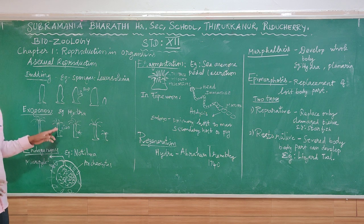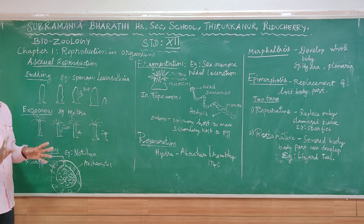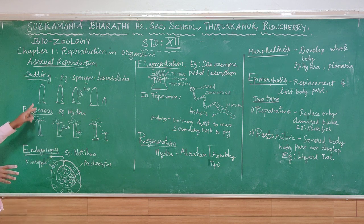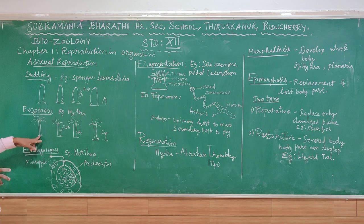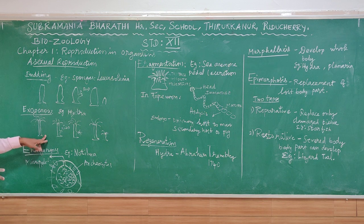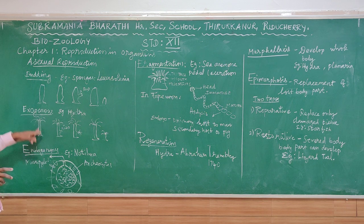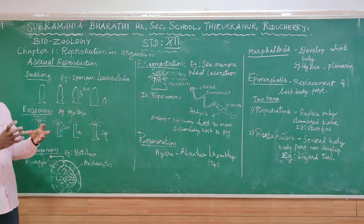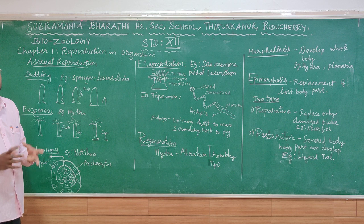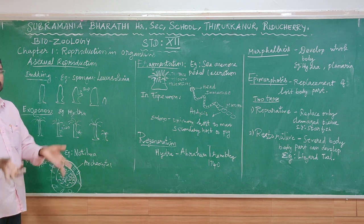In hydra, exogenous budding occurs step by step. The individual adult hydra is attached to a substrate. It has tentacles, a mouth, and a body column.